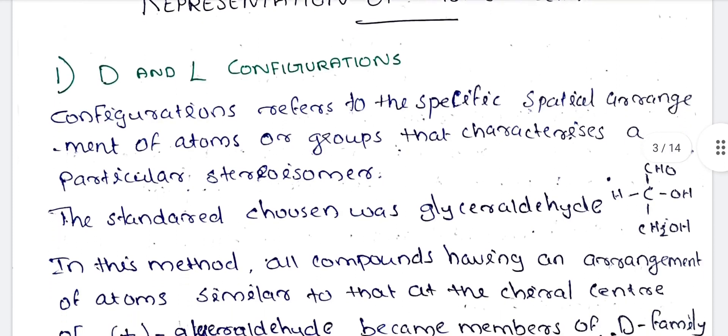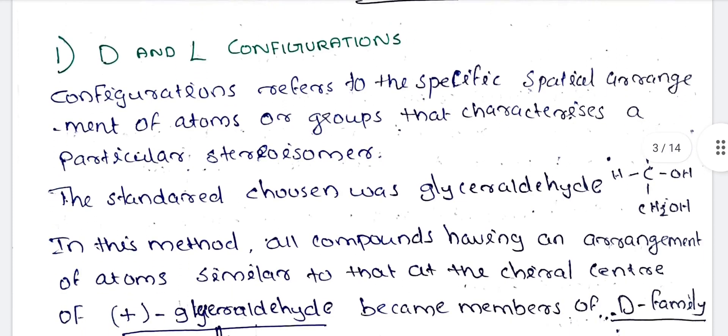Now we are going to talk about 6 methods. What is the configuration? Configuration refers to the specific spatial arrangement of atoms or groups that characterizes a particular stereoisomer. The standard chosen was glyceraldehyde.